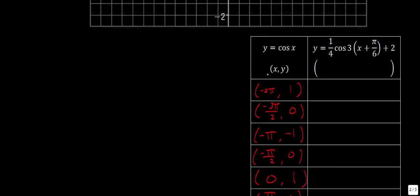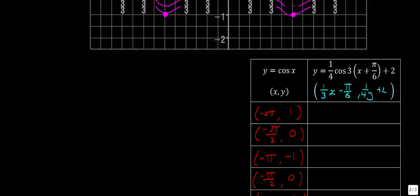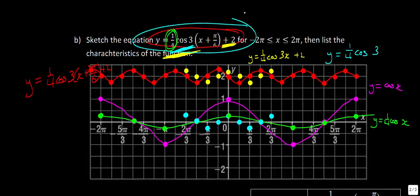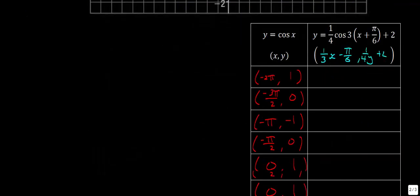Now we have to come up with the corresponding ordered pair for our transformed function. We know b is three, so the new x coordinate is (1/3)x minus π/6 — we take the reciprocal of b and then apply the phase shift. The y coordinate is (1/4)y + 2 — we multiply by one quarter and then add two. You just feed these values in and you get the corresponding points that make up that red graph.